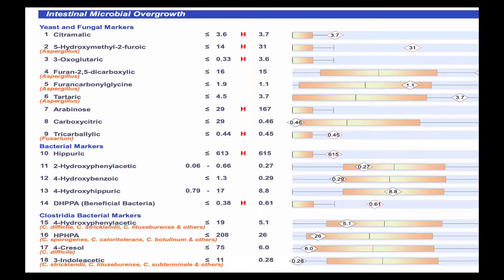This is the first page of the organic acids test. From markers 1 to 18, we're looking at the different markers for mold, yeast, and bacterial clostridia overgrowth. The first markers look at mold toxicity, and especially if numbers 2, 4, and 5 are elevated, you may want to look at treating mold or doing further investigation like a mycotoxin test or the visual contrast sensitivity test. Number 7 in particular looks at candida — this is a very elevated marker of candida, looking at candida metabolism from the entire body, not just the large intestine like a stool test does.